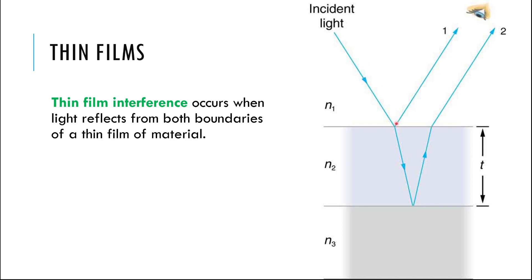From Snell's law and the law of reflection, when light hits a boundary between two media — say, moving through air and encountering oil or glass — it does two things: it reflects and it refracts. Some of the light will reflect from the top of the thin film, and some will refract into the thin film. The thin film sits on top of another medium, N3, and part of the light will also reflect off that lower boundary.